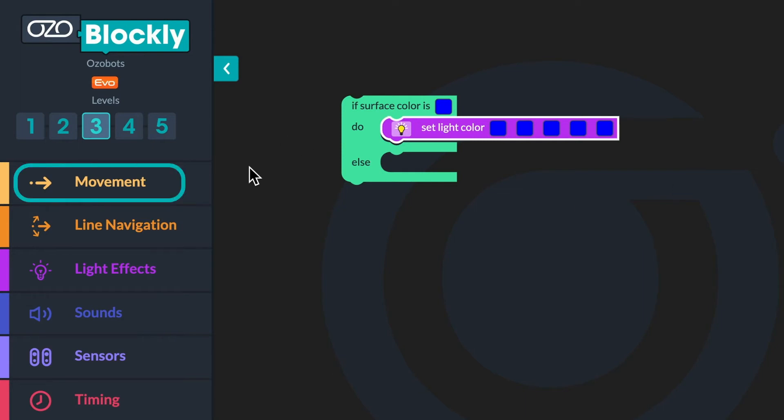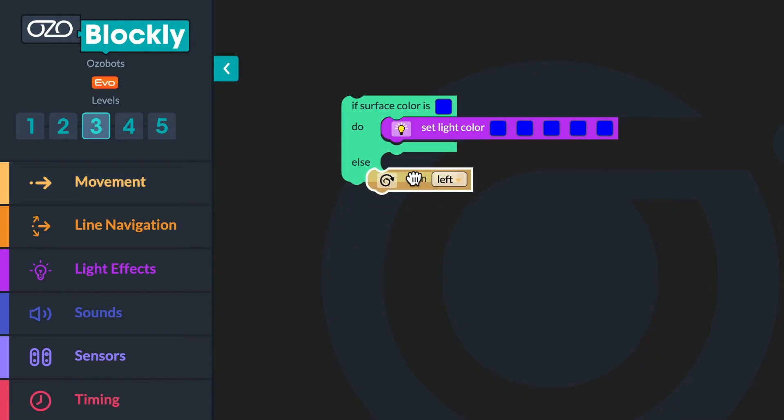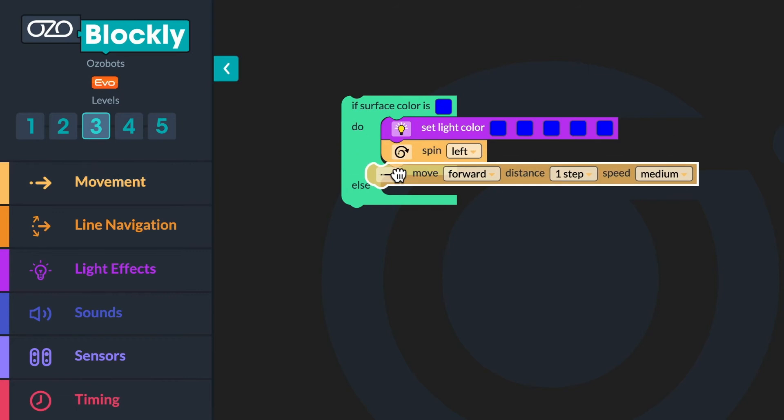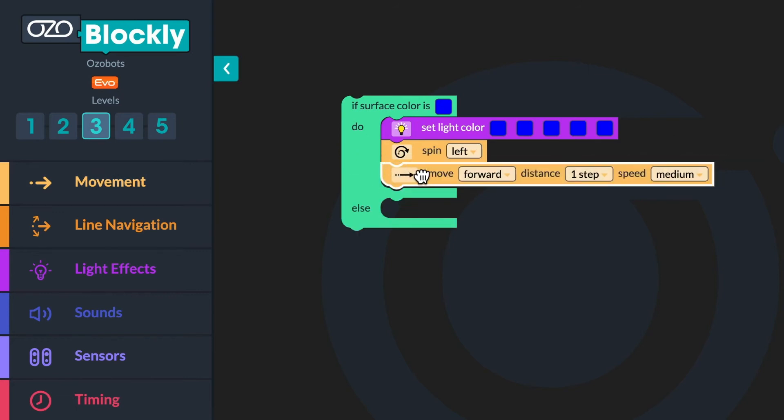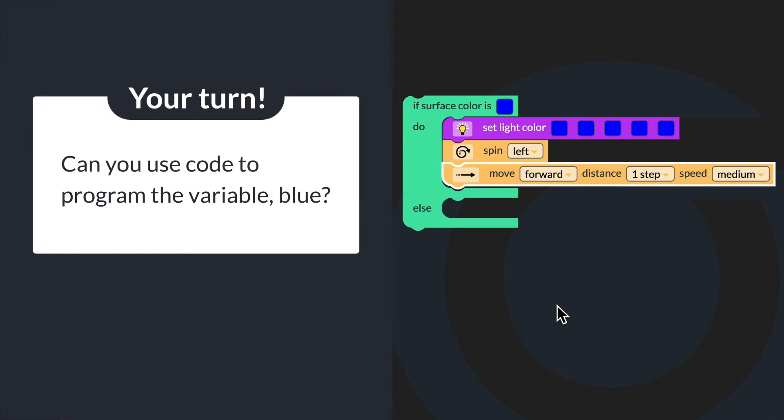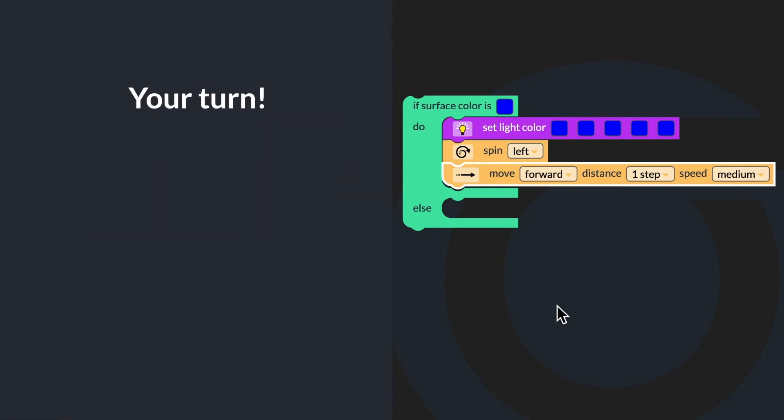Now go to movement. Click and drag a spin left block below the set light color to block. Finally, go back to movement and click and drag a move forward distance one step medium block below the spin left block. Can you use code to program the variable blue? You will not test your program yet since it is incomplete.